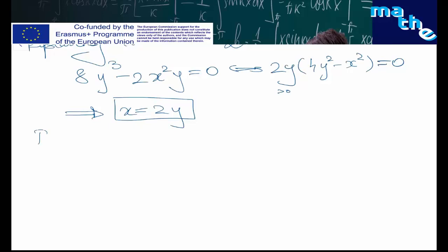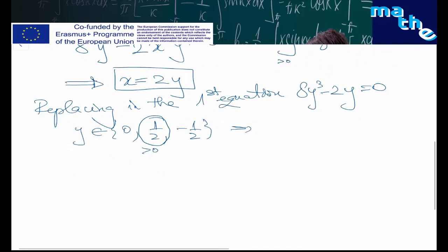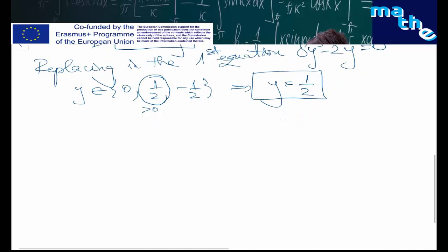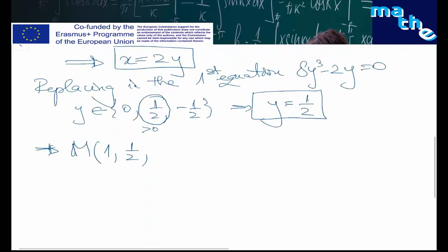Replacing z = 2y in the third equation, we get 8y³ − 2x²y = 0, which is equivalent to 2y(4y² − x²) = 0. Since y is strictly positive, we are left with 4y² − x² = 0, giving x = 2y... and similarly, replacing in the first equation, we obtain y = 1/2 as the only strictly positive solution. So the only critical point is m = (1, 1/2, 1).